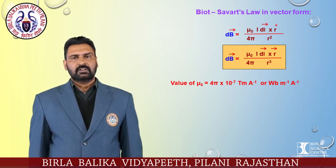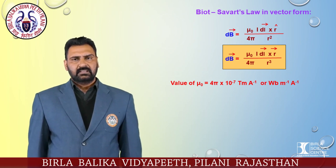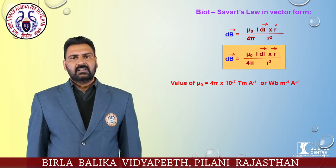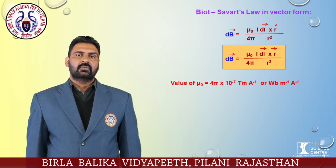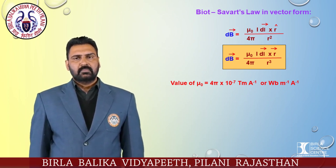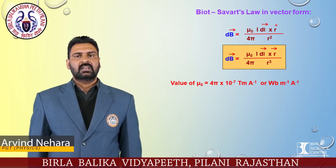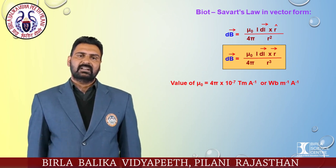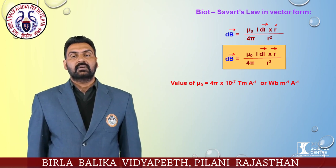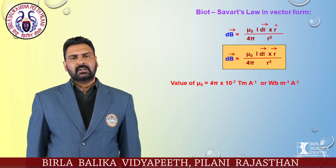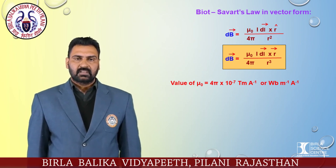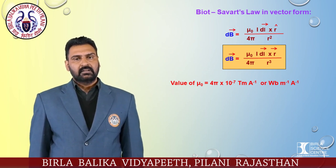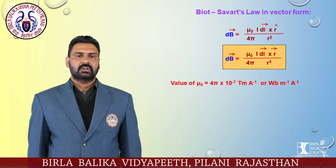In vector form, Biot-Savart's law is written as: dB = (μ₀ i dl × r̂) / (4π r²), or equivalently dB = (μ₀ i dl × r⃗) / (4π r³). The direction of magnetic field dB is the same as that of dl × r⃗, which can be determined by the right hand screw rule. The current element is a vector quantity whose magnitude is the product of current and the length of the small element, with direction along the flow of current.